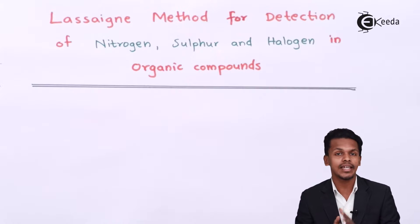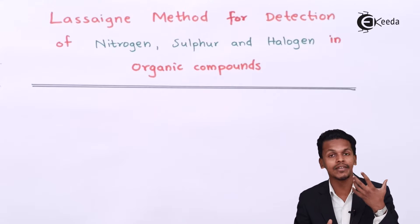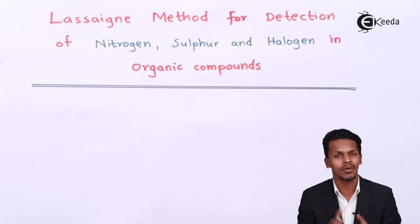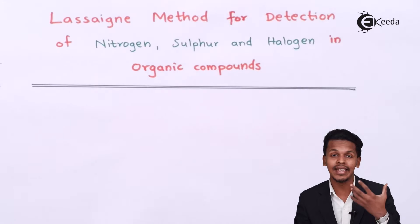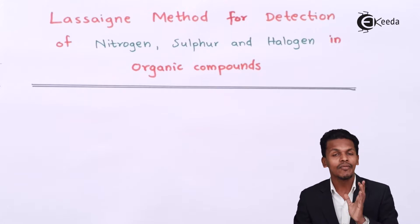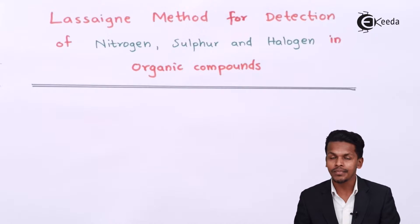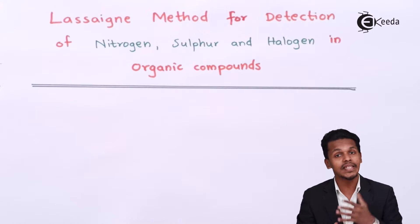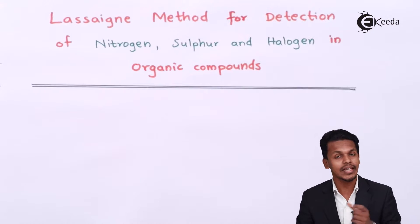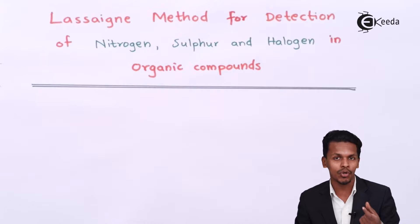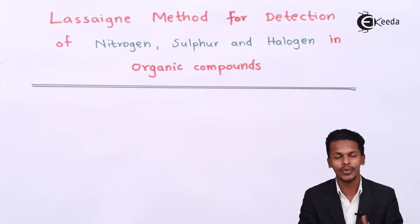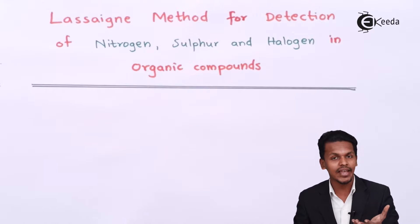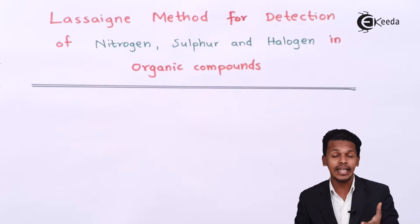In this method, the organic compound is analyzed for elements present in it other than carbon and hydrogen — that is, nitrogen, sulfur, and halogen. For that, we take the organic compound, add a small piece of sodium, and heat it. In the sodium fusion test, a small amount of the compound, whether solid or liquid, is taken and a small piece of sodium is added and heated.